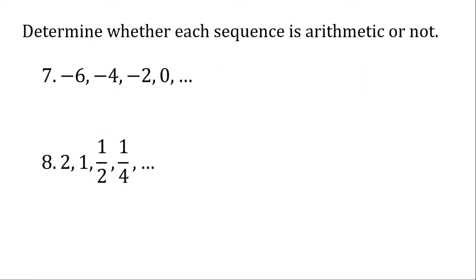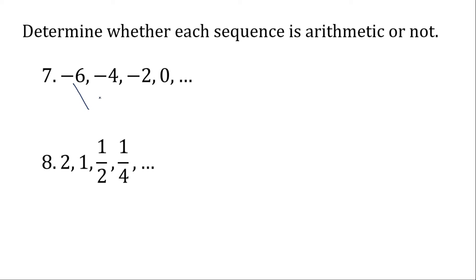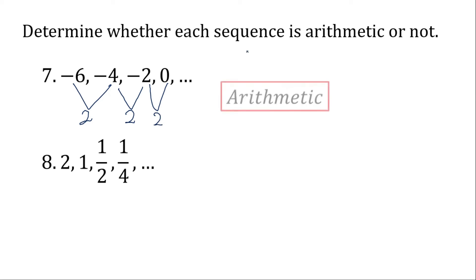Number 7 is a sequence with negative numbers — don't be confused. Negative 4 minus negative 6: the double negative becomes positive, so we get positive 2. Negative 2 minus negative 4 is also positive 2. And 0 minus negative 2 is 2. They all have a common difference of 2, so this is an arithmetic sequence.